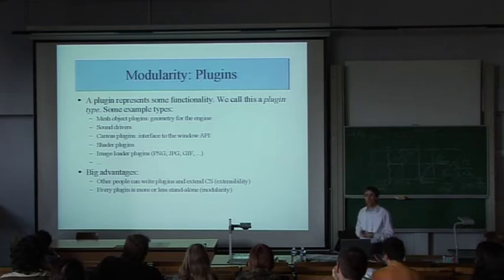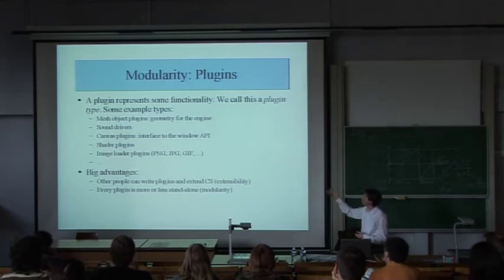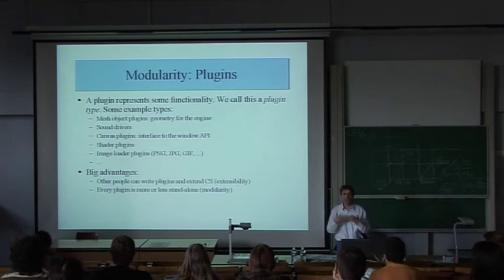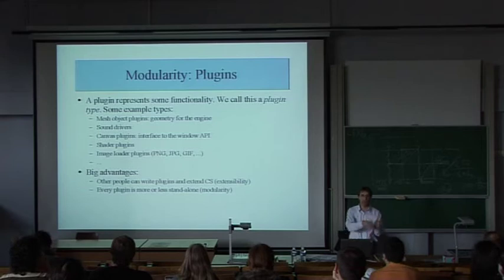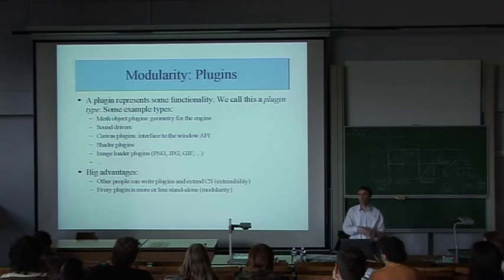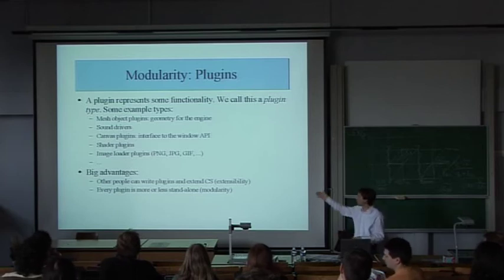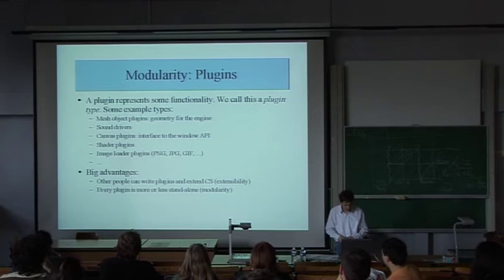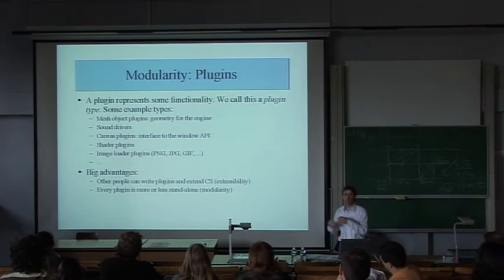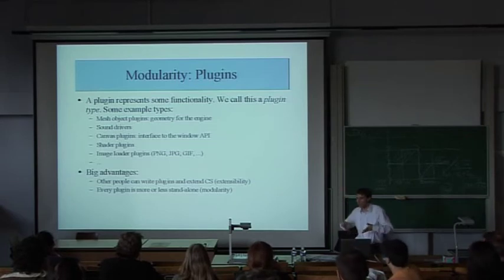Here are the basic libraries: support for managing plugins, something to load plugins, APIs for system-specific tasks, utility classes, a library with mathematical classes, image manipulation tools, and a high-level library for applications. Then nearly 95% of the code is in some plugin. The plugin represents some functionality — we call this a plugin type. For example, sound drivers: there's one interface, one API, but multiple plugins all implementing that same interface, so you can have a sound driver for Linux and one for Windows. It's easy to write new plugins, even as a third party.